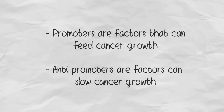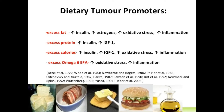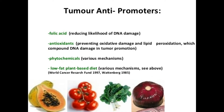Examples of dietary tumor promoters include excess fat, excess protein, excess calories, and excess omega-6 EFA. Tumor anti-promoters include folic acid, antioxidants, phytochemicals, and a low-fat plant-based diet.